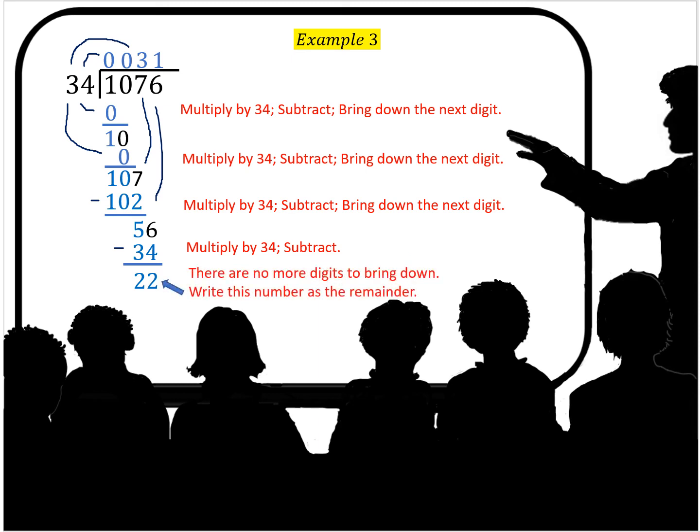There are no more digits to bring down. So that is our remainder since it's less than 34. Our final answer is 31 remainder 22.